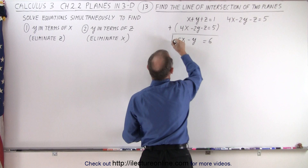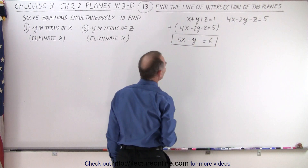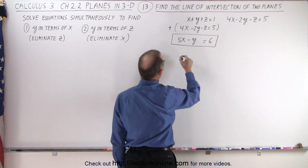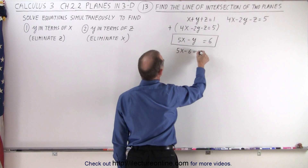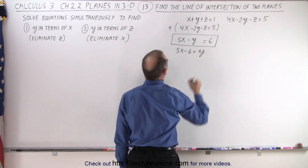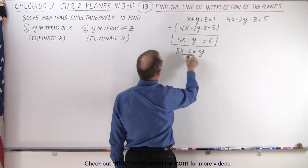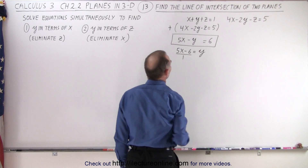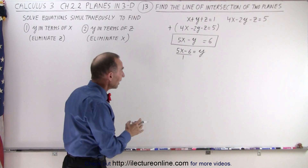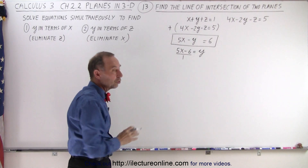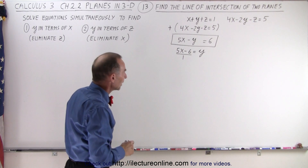So we end up with an equation where 5x minus y equals 6, or 5x minus 6 is equal to y. We can write that, and you'll see in a moment why we did that — because we want to put it into the general format of the equation of a line.